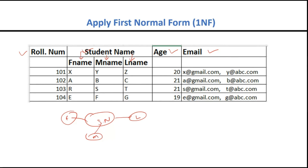This student name attribute is a composite attribute. Composite attributes can be represented in an Excel file, but they are not at all allowed in relational databases because relational databases expect only atomic values. There is no problem with role number or age, but there is a problem with student name being composite. And this email column — this is what a multi-valued attribute is. How? For one student, multiple email accounts can be there.